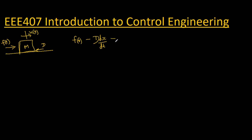We also have to factor in the inertia of the mass, which is the mass m multiplied by the acceleration d²x/dt². Assuming there are no other forces like wind resistance or gravity — the surface is perfectly horizontal — then these forces represent the complete system.